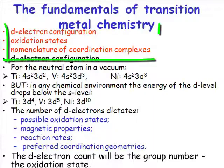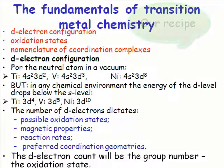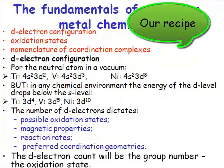We're talking about the fundamentals. We have the d-electron configuration, we have oxidation states and nomenclature of coordination complexes. What is that? Well, that's not a piece of instruction, that is a recipe. That's how we're going to look at transition metal chemistry in terms of the fundamentals.